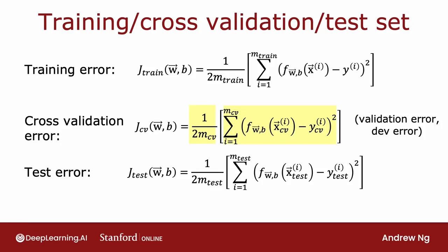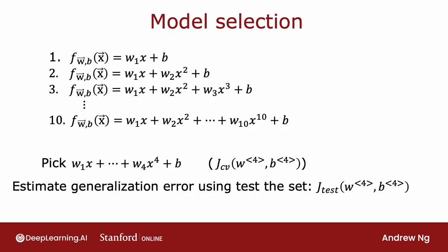Armed with these three measures of learning algorithm performance, here is how you carry out model selection. With the 10 models—d equals 1 through d equals 10—you can fit the parameters w1, b1. But instead of evaluating these on your test set, you evaluate them on your cross-validation set and compute JCV of w1, b1.